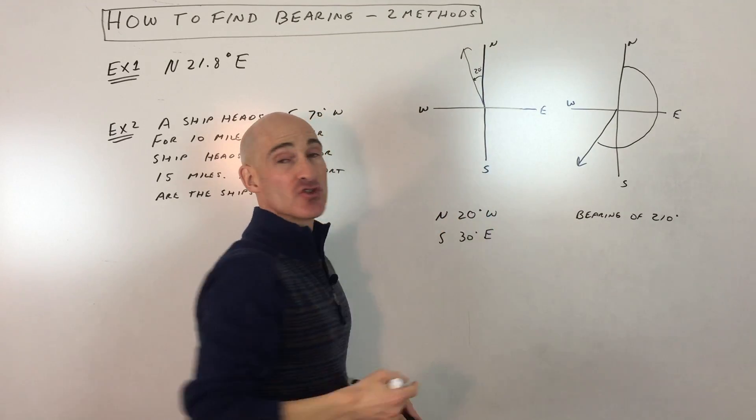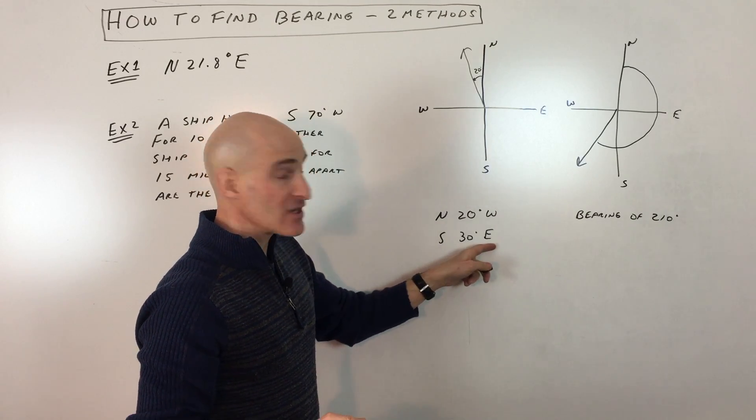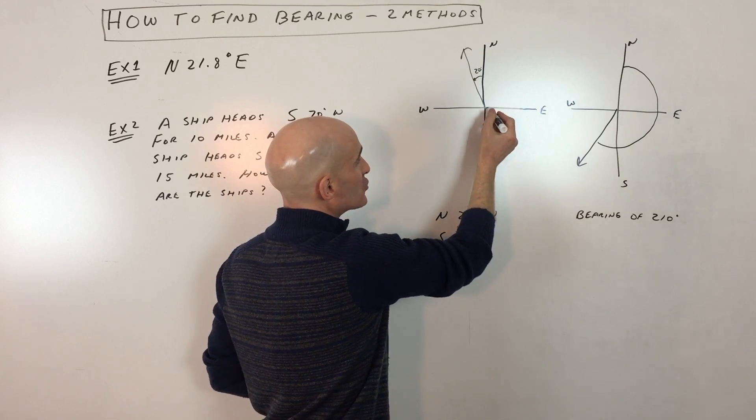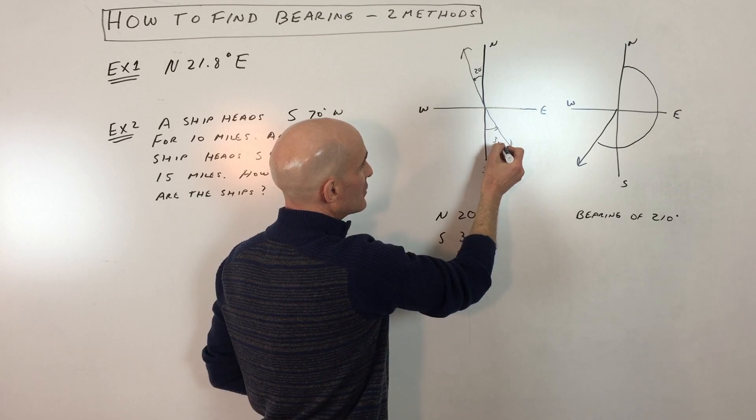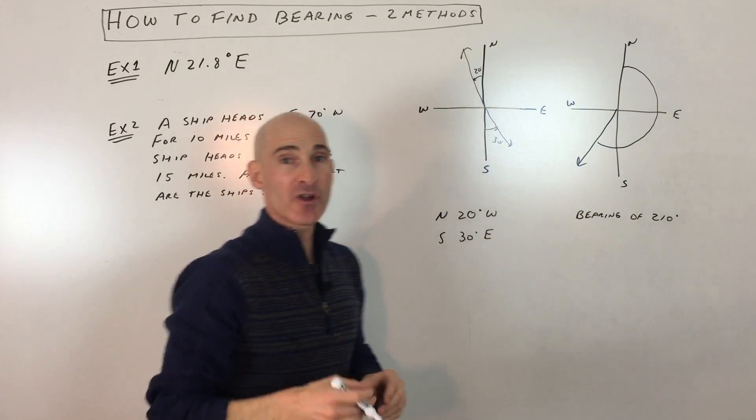Now, if we want to find this angle here, you just do 90 minus 20 because that's the right angle. Let's look at this one. South 30 degrees east. So you start facing south and then you go 30 degrees towards the east. Like that. So this would be like a 30 degree angle right there. So the two different ways of measuring bearings. Let's go through a couple examples together.